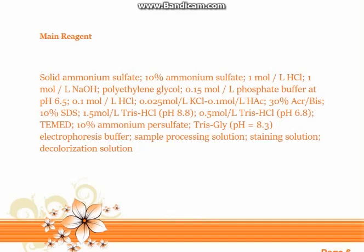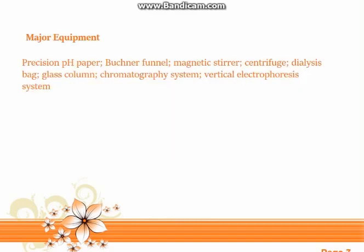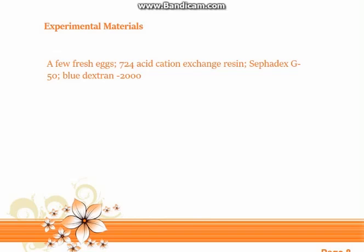Additional solutions include: sample processing solution, staining solution, and colorization solution. Major equipment: precision pH paper, Büchner funnel, magnetic stir bar, centrifuge, dialysis bag, glass column, chromatography system, and vertical electrophoresis system. Experimental materials include fresh eggs, 724 acid cation exchange resin, Sephadex G-50, and Blue Dextran-2000.